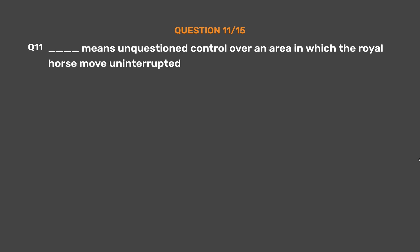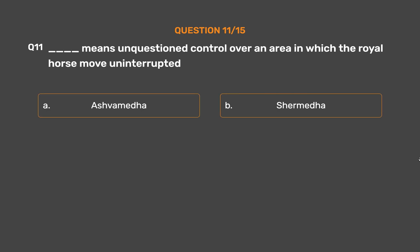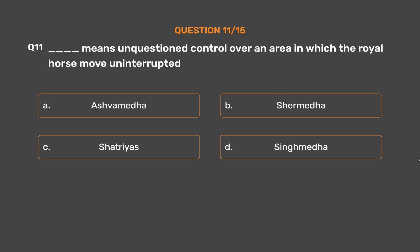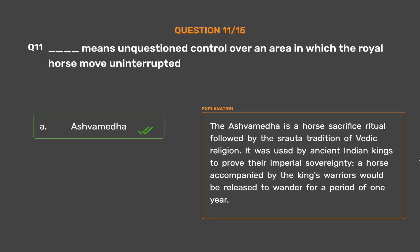Question No. 11. What term means unquestioned control over an area in which the royal horse moved uninterrupted? Option A: Ashwamedha. Option B: Sheramedha. Option C: Kshatriyas. Option D: Singhammedha. The correct answer is Option A: Ashwamedha. The Ashwamedha is a horse sacrifice ritual of the Shrauta tradition of Vedic religion, used by ancient Indian kings to prove their imperial sovereignty. A horse accompanied by the king's warriors would be released to wander for a period of one year.